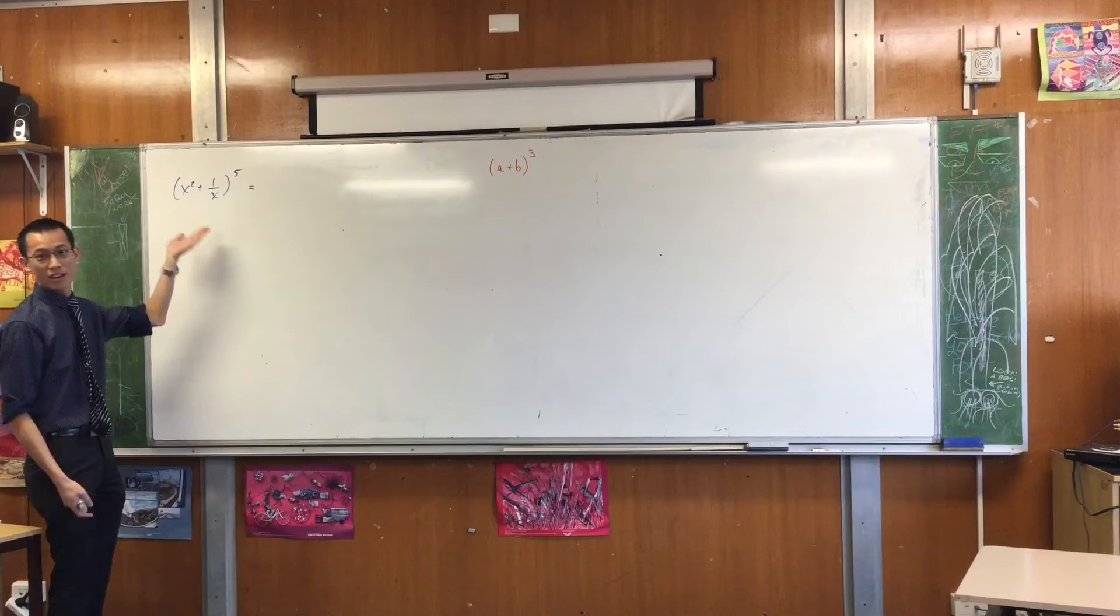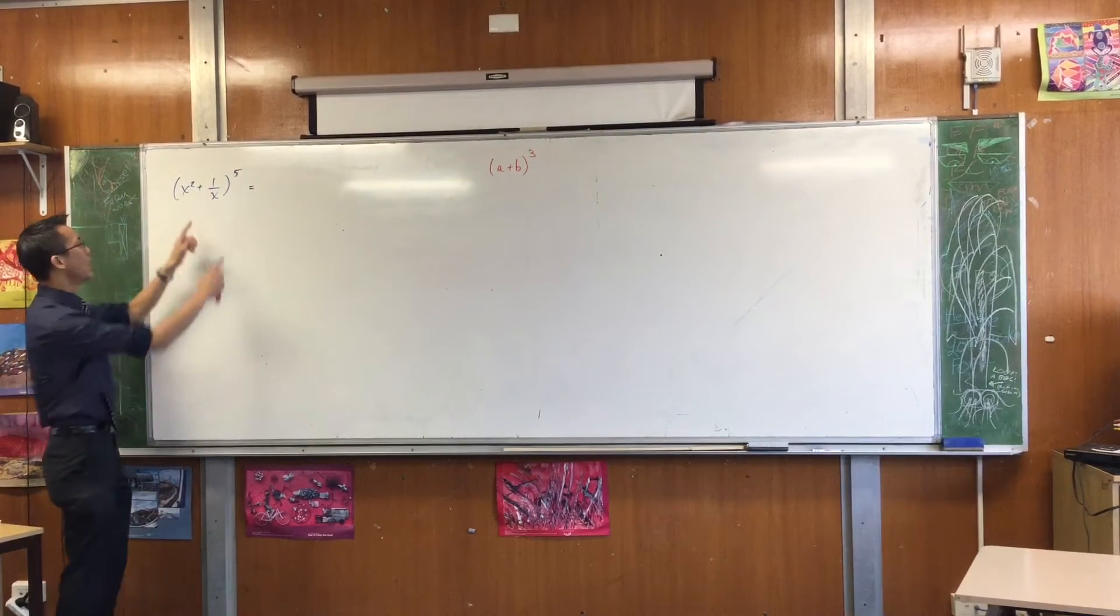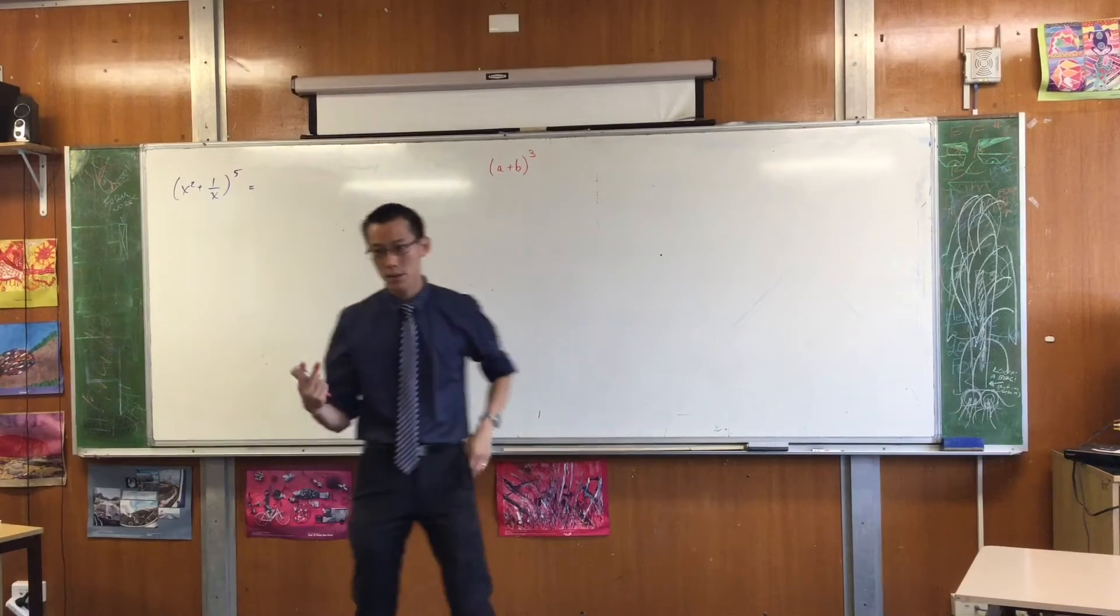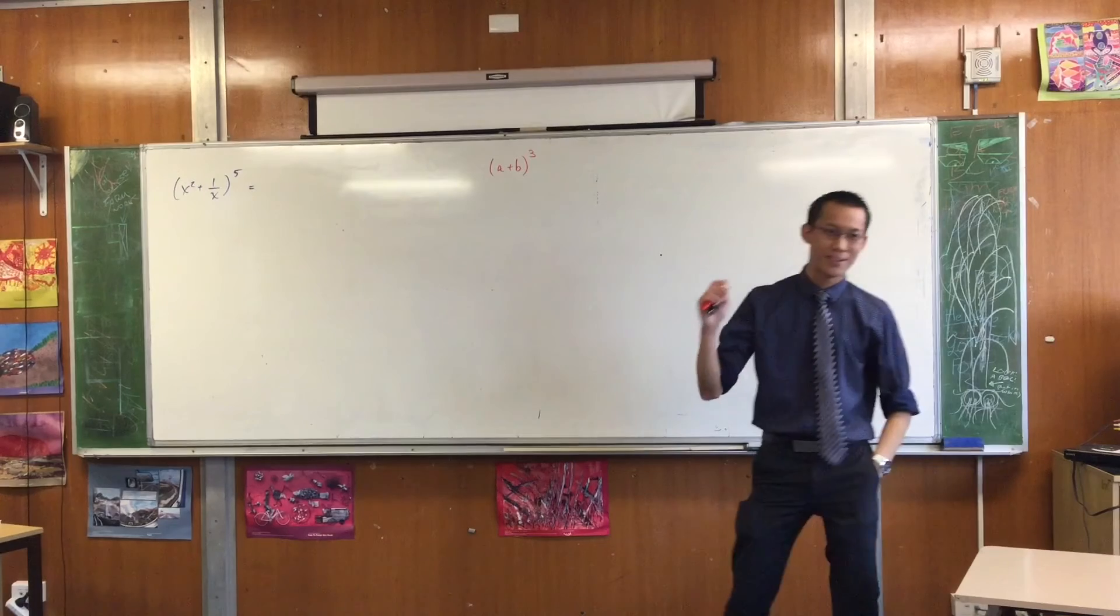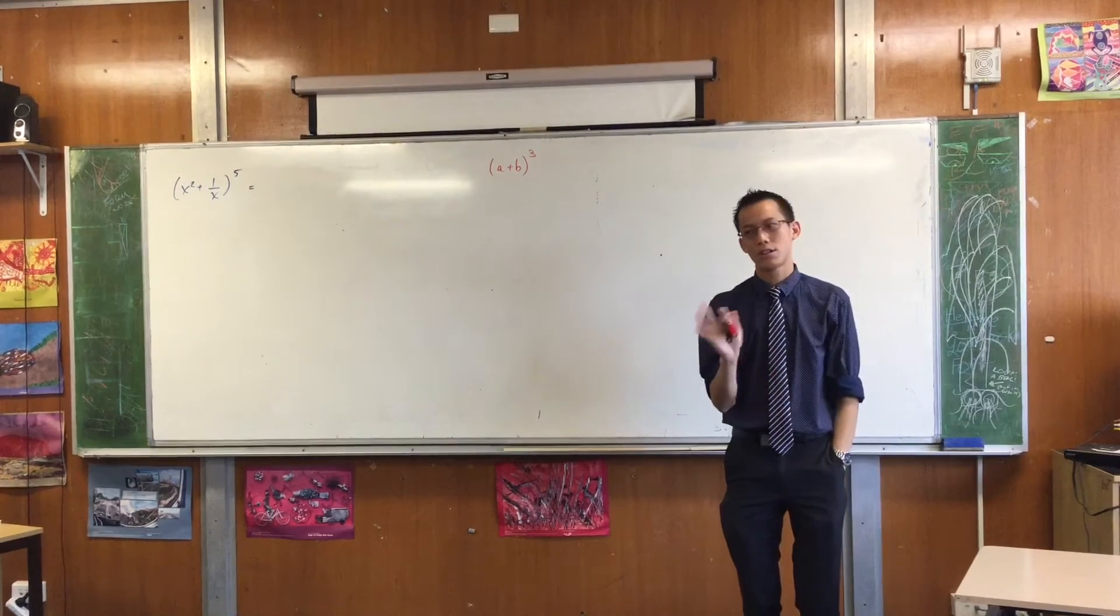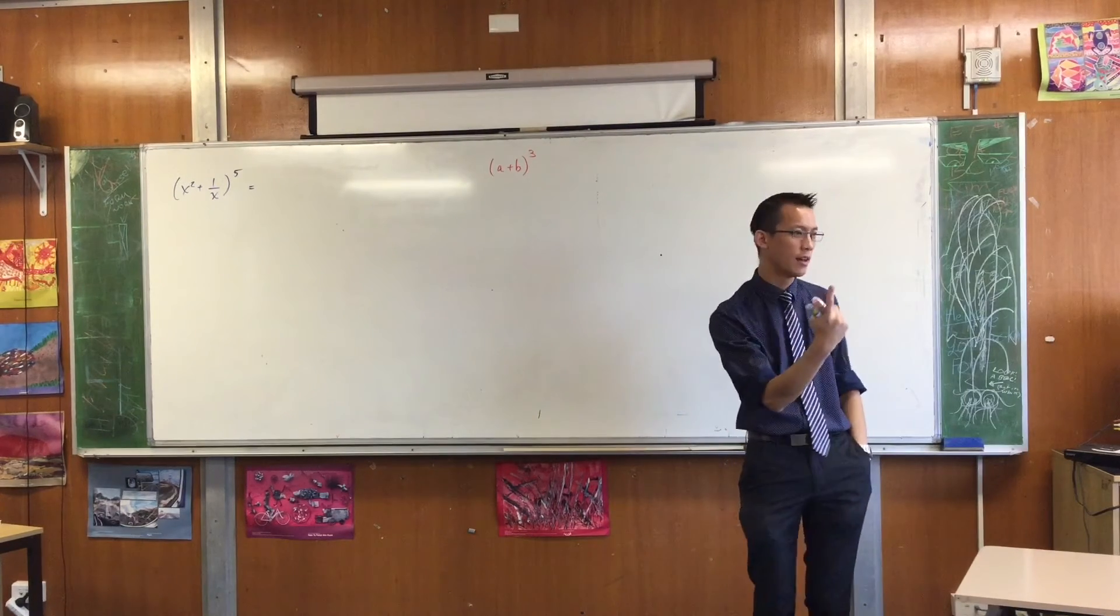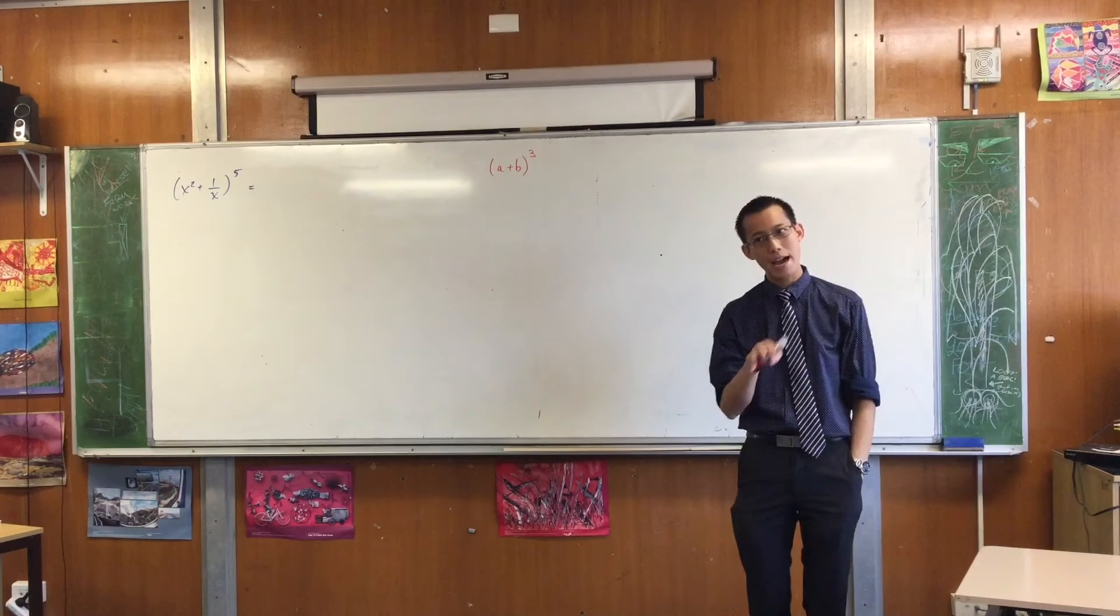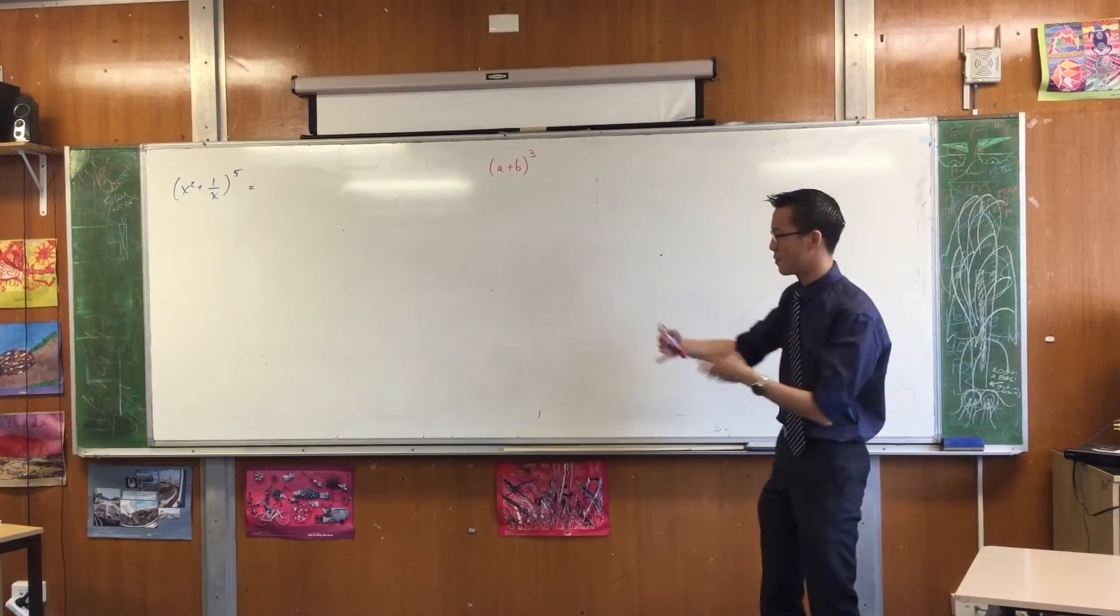I appreciate this is qualitatively more difficult than those early examples. Number one, I've thrown fractions in there—gross. Number two, I've got variables, or power rules I should say, on both terms, which is very different to those introductory examples where you just had a one.